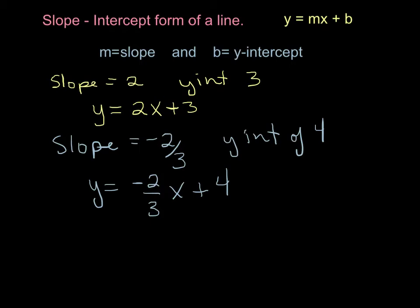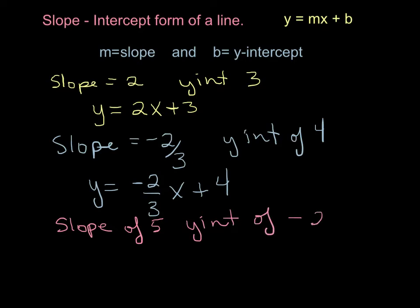Another example: let's have a look at the equation of a line that has a slope of 5 and a y-intercept of negative 2. That's going to give us the equation y equals 5x minus 2.